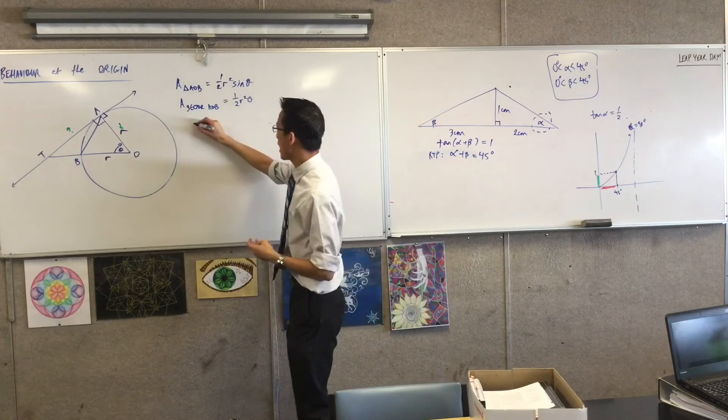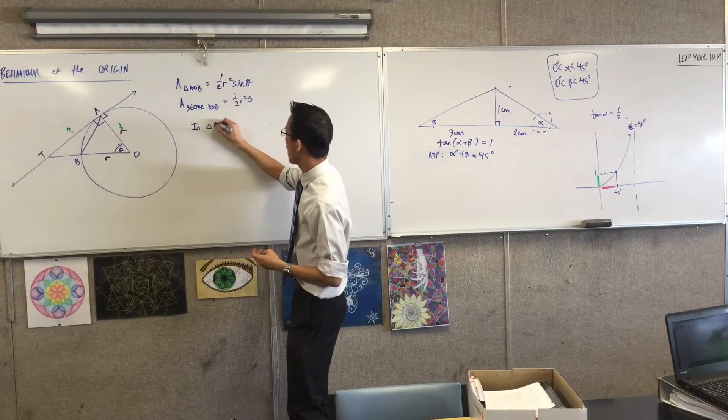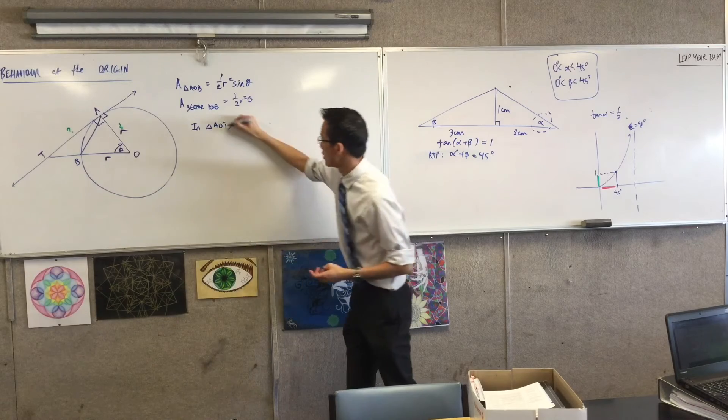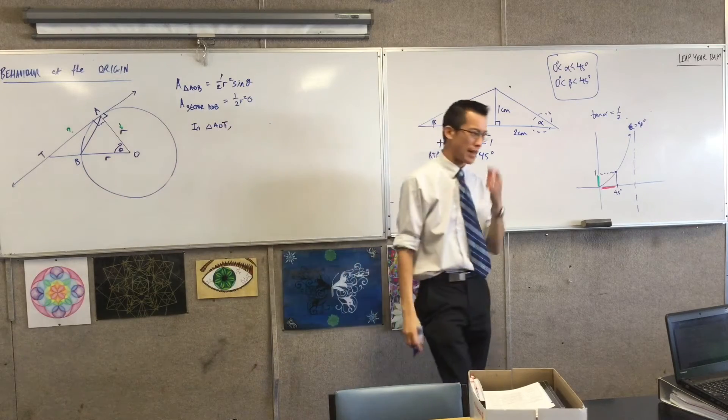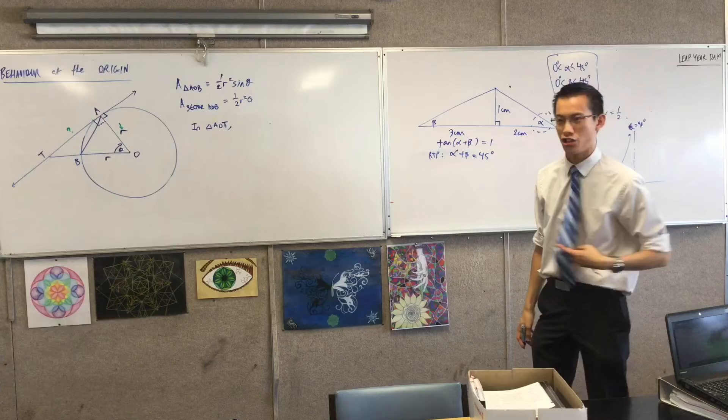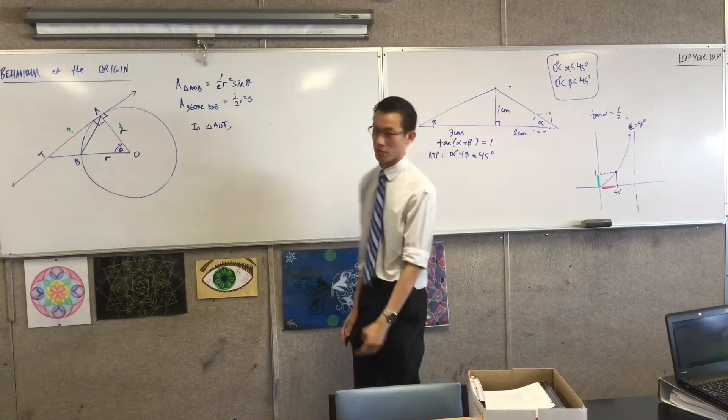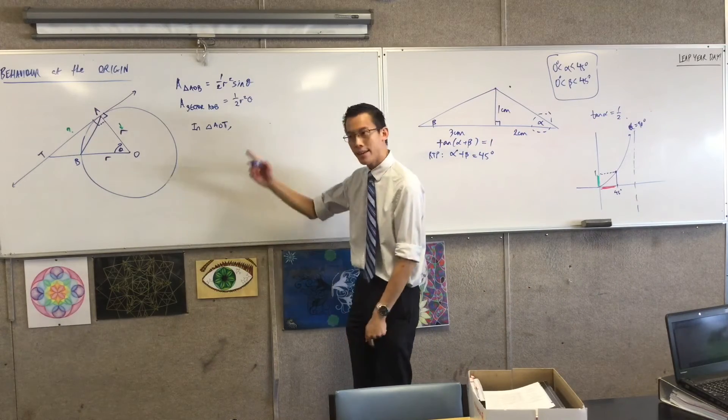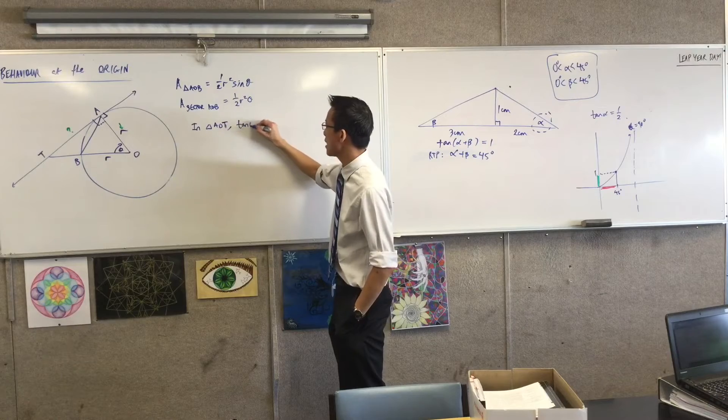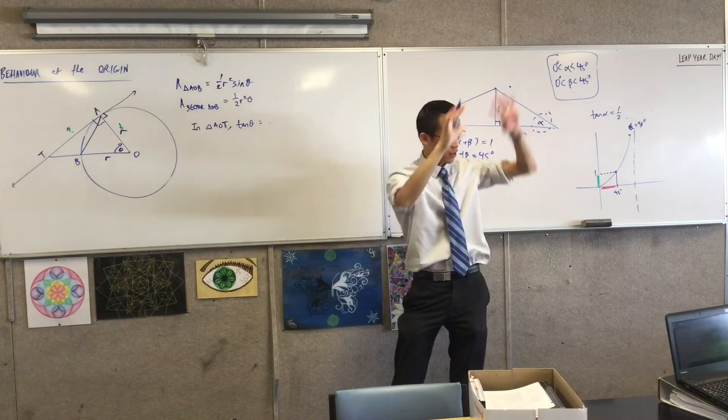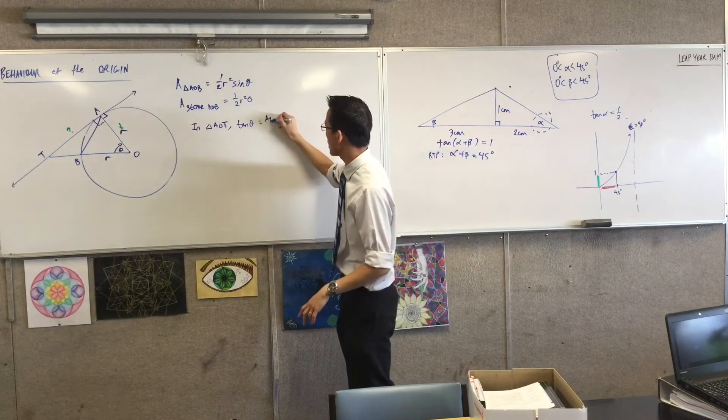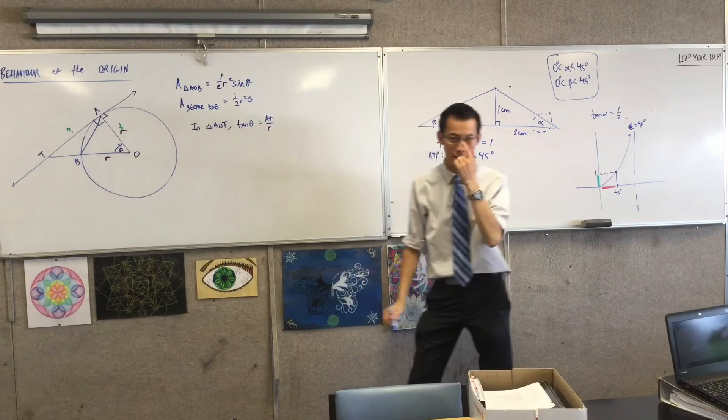So I'm going to say, in that triangle AOT - when you're pulling out your right angle triangle trig formulas ratios, you should always state the triangle that you're in, because I've got a whole bunch of them. In that triangle, tan of theta is opposite over adjacent, which is AOT over R, the radius.